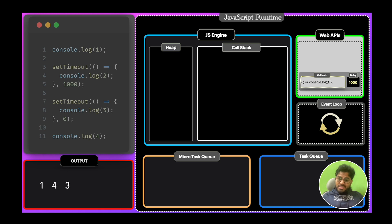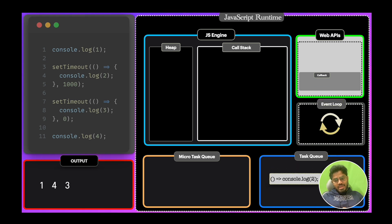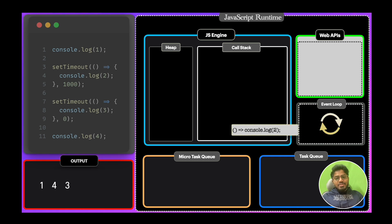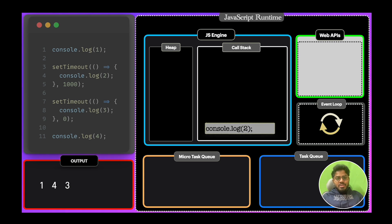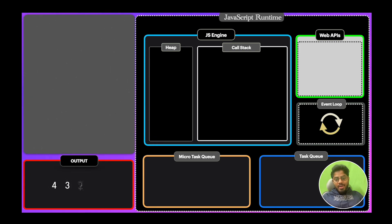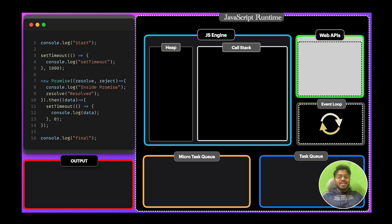After the specified delay of 1000ms, the remaining callback will be pushed to the task queue. The event loop monitors the call stack and task queue, and as the call stack is empty, it pushes this callback into the call stack, executing to give output 2. A key point to remember: if a setTimeout with 1000ms is given, it will execute after 1000ms only if the call stack is empty. The output for this code snippet will be 1, 4, 3, 2.